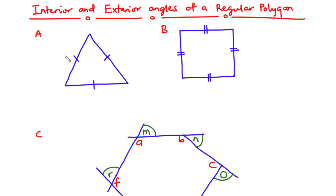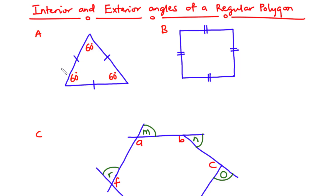In figure A, we have an equilateral triangle. This triangle has three sides which are all equal and it has equal interior angles. The interior angles are 60 degrees each — 60 degrees, 60 degrees, and 60 degrees. So an equilateral triangle has three equal sides and three equal interior angles.